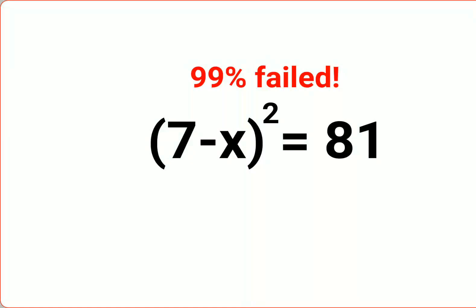Welcome everyone, so today we are going to understand how to solve this very nice problem. The question is (7 minus x) the whole square equals 81. Now see, whenever you have a variable which is equal to a number and there is a square to the variable, if you want to find the value of a variable you need to take square roots on both sides.